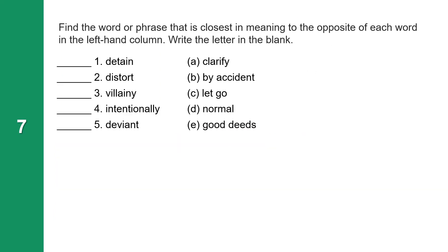Now find a word or phrase that is closest in meaning to the opposite of each word in the left-hand column, and write the letter in the blank. Detain — the opposite is C, let go. Distort — the opposite is clarify. Villainy — the opposite is E, good deeds. Intentionally — the opposite is B, by accident. Deviant — the opposite is D, normal.